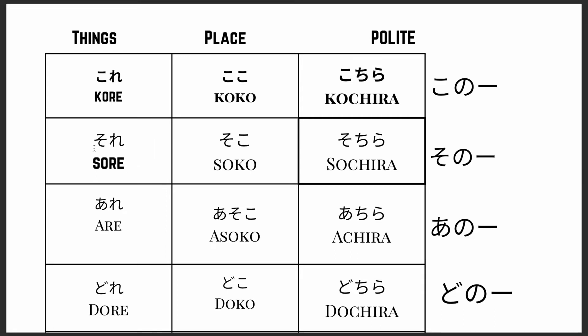Further away from the speaker: 'sore' means 'that,' and 'soko' means 'there.' 'Asoko' means 'over there,' which is further away from both the speaker and listener. 'Dore' means 'which' — and if you have only two options you will use 'dochira.' 'Doko' is 'where' for a place question. 'Dochira' means 'which' for more than two options. 'Donata' is the polite way to ask 'who,' while the casual form is 'dare.'